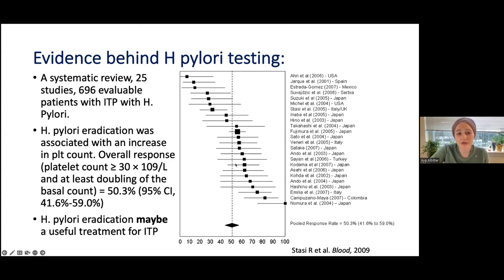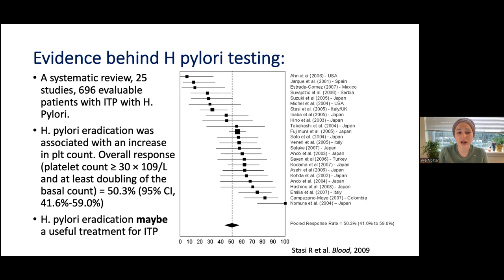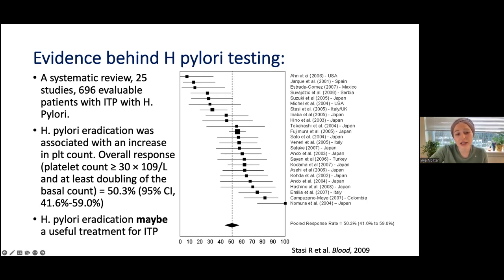The evidence behind this testing came from a systematic review of 25 studies with around 700 patients who had ITP with H. pylori. They eradicated H. pylori and noticed an increase in platelet count — around 50% of patients had a platelet count increase of more than 30, with counts going above 30.